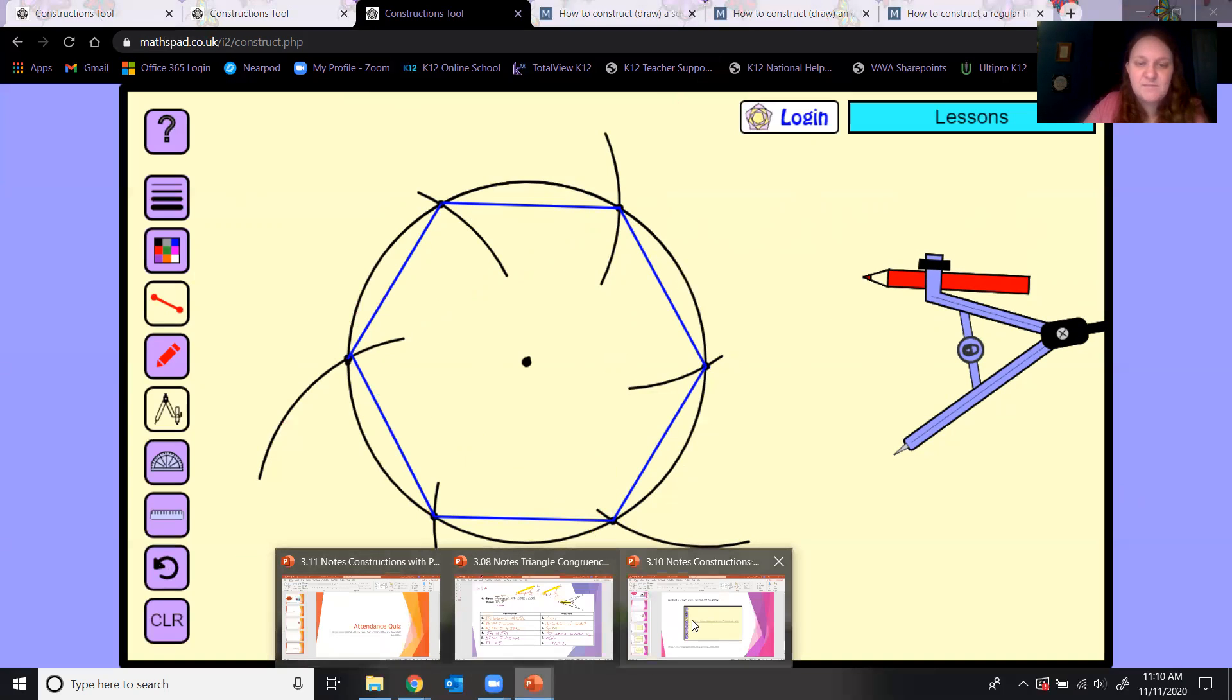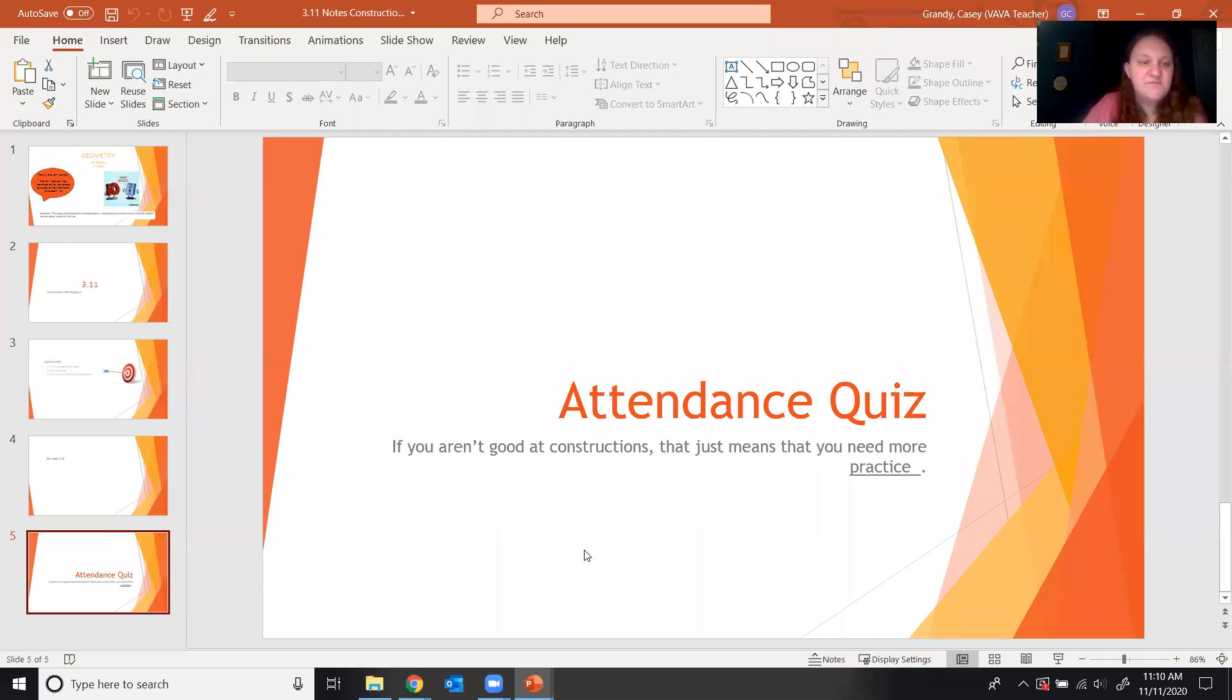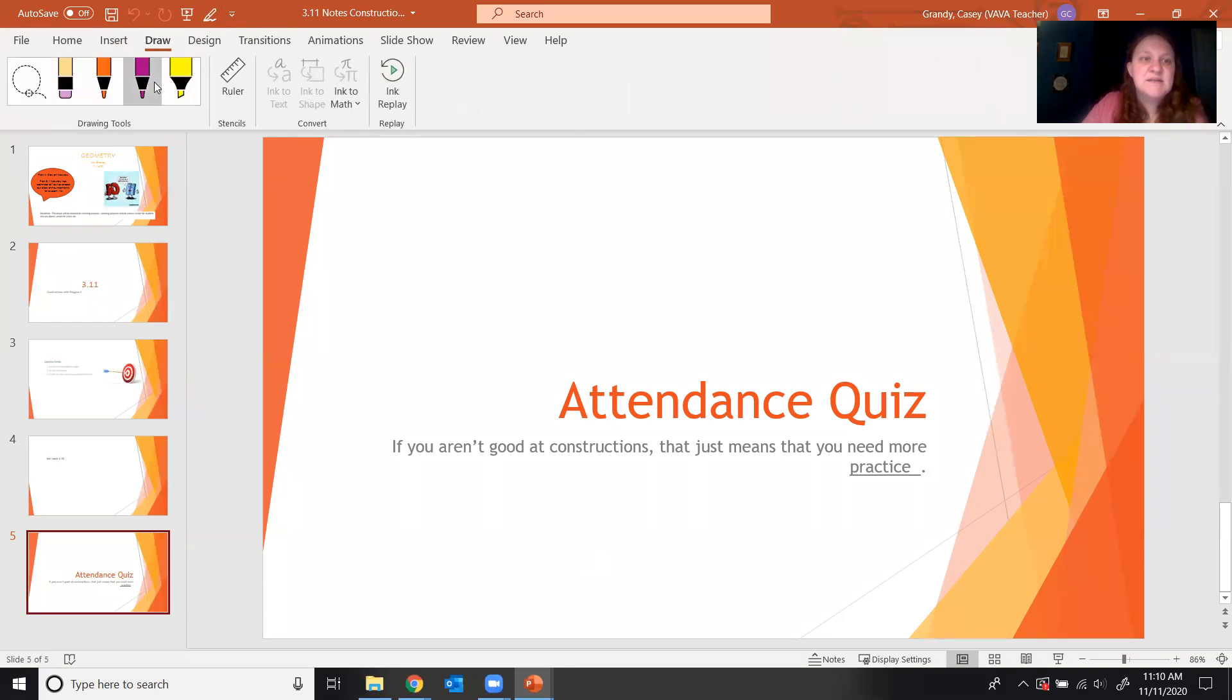Make sure you practice them because they're not going to go away. The last thing you need for the lesson today is our attendance quiz word. If you aren't good at constructions, all that means is you need more practice. Today's attendance word is practice. Spell it correctly, please. Make sure that you enter that word before noon on Wednesday. The attendance quiz will close at noon on Wednesday. Don't forget the lesson check. Have a great day, guys.